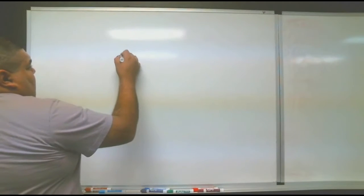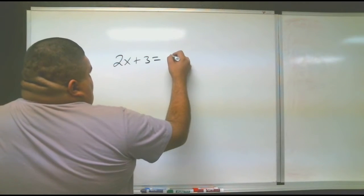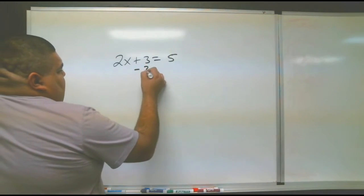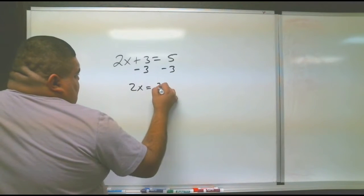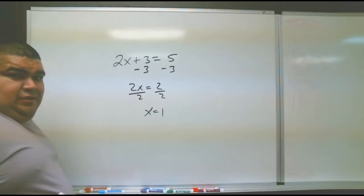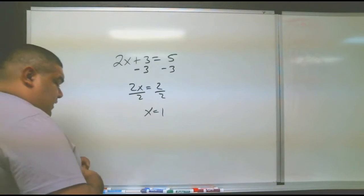For example, if I were to say 2x plus 3 equals 5, I'm not only going to do minus 3 minus 3, 2x equals 2, divide by 2, x equals 1. That's not what I mean.